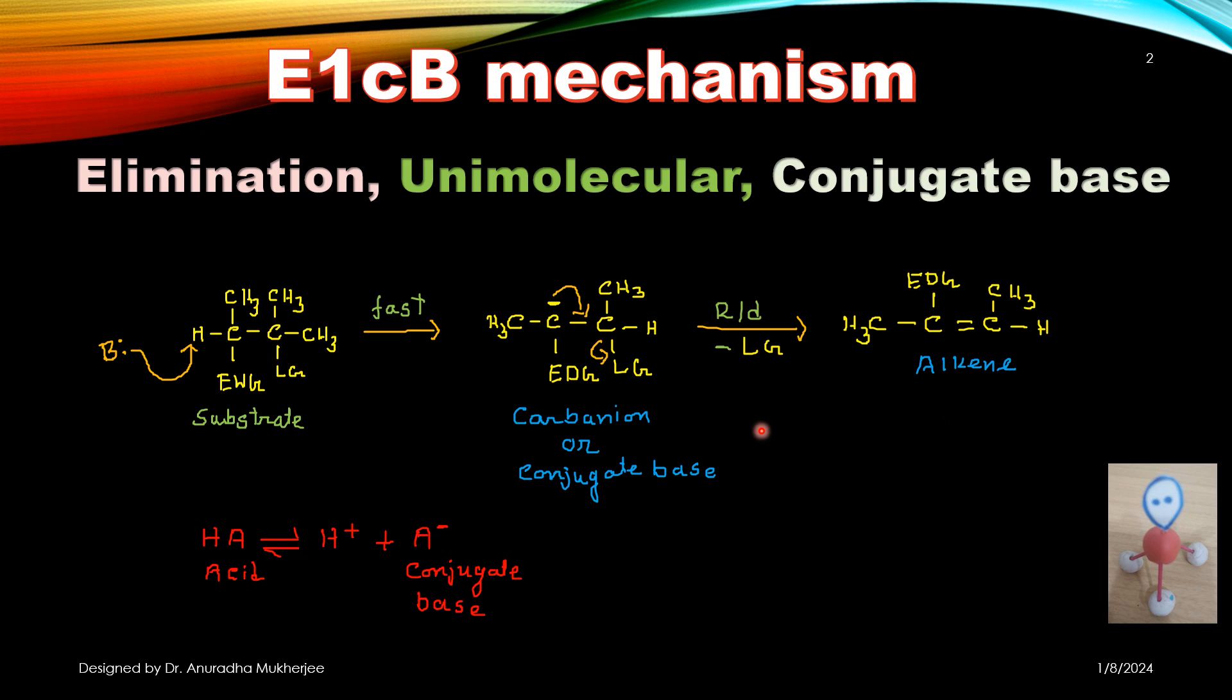The next step is the rate determining step or the slowest step. Here the leaving group leaves and the negative charge over the carbon moves to the next carbon and forms an alkene.